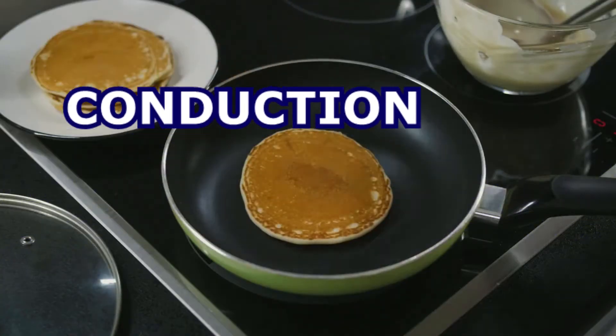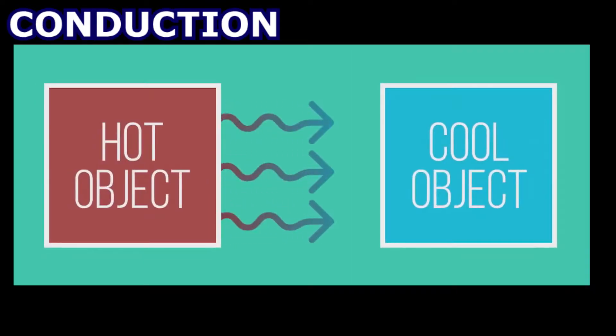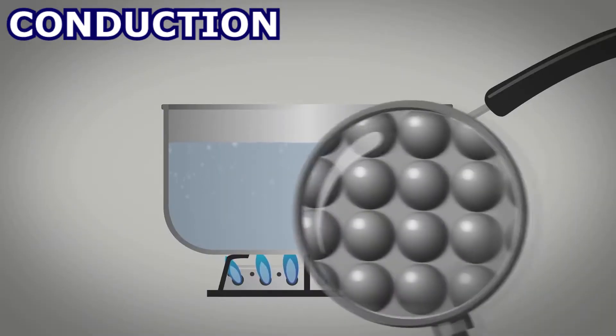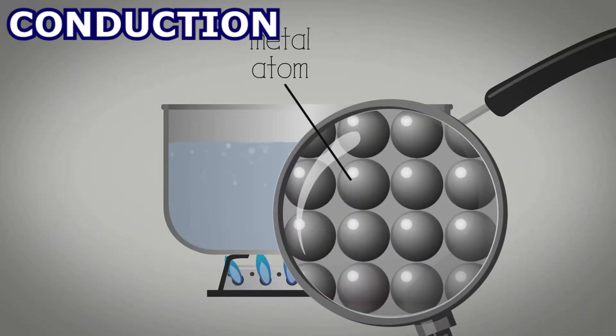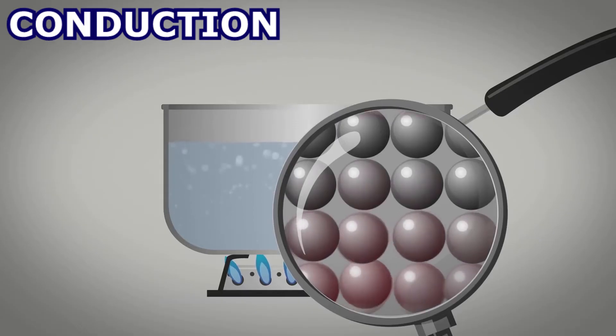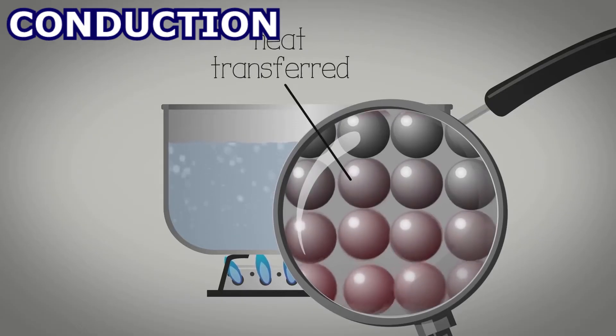Conduction is the transfer of heat from a hot object to a cooler object when they are in contact. The molecules of the hot object move faster. When they collide with those of the cold object, they transmit that movement causing them to move faster and increase the temperature.